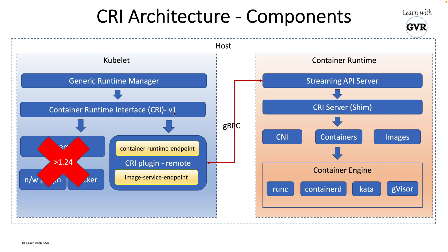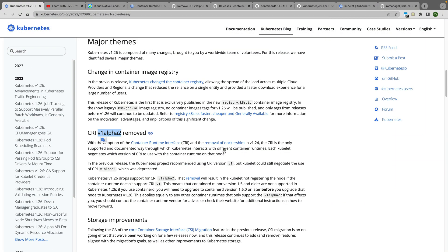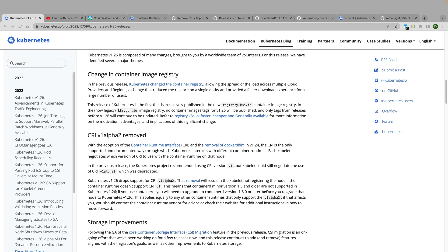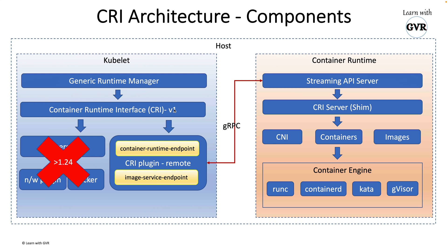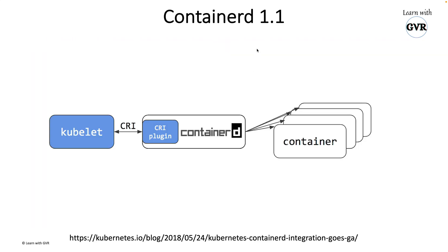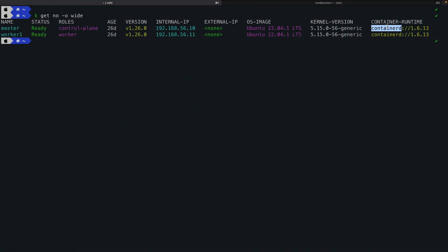From the CRI perspective, from Kubernetes 1.26 onwards only CRI v1 is supported. CRI v1 alpha 2 has been removed. The release cycle goes: v1 alpha 1, v1 alpha 2, then v1 — they don't jump to v2. Also important: from containerd 1.1 onwards, the architecture is that kubelet is just a client and containerd creates the actual containers.